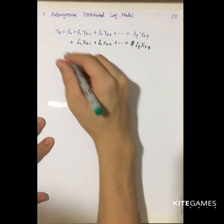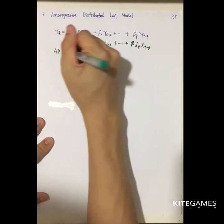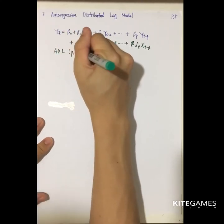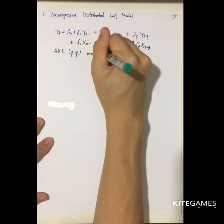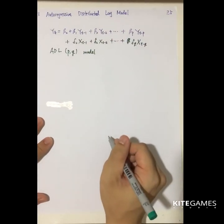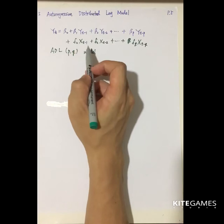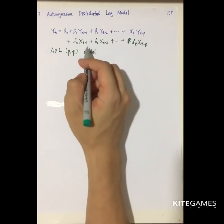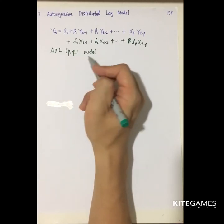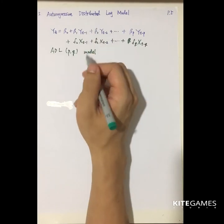So we call this ADL PQ model. Some variables does not only depend on itself, it also depends on other distributed variables, so that's why this is called a distributed lag model.